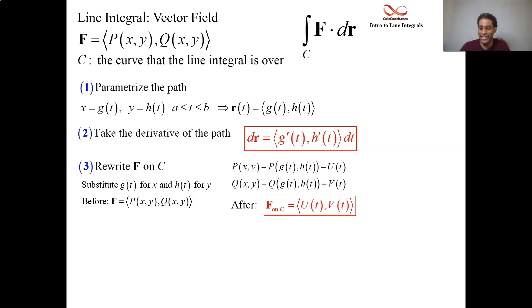We take the dot in step four, the dot between step two and three. It'll be u(t) times g'(t) and v(t) times h'(t), all multiplied by dt. That's what you integrate, single variable integral as t goes from a to b.